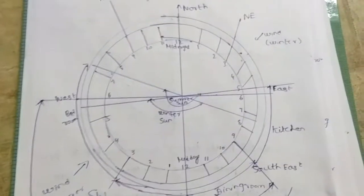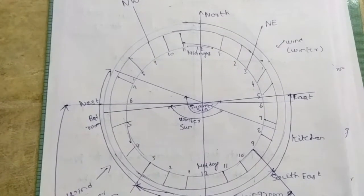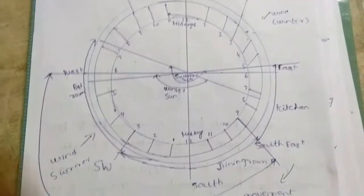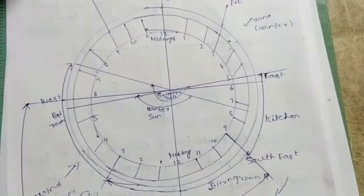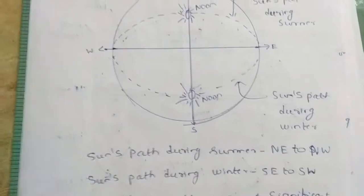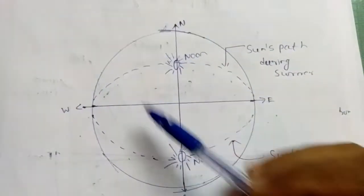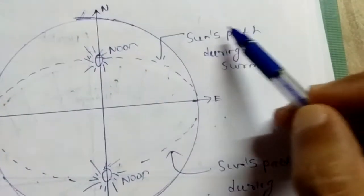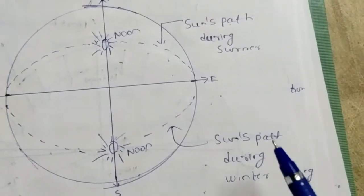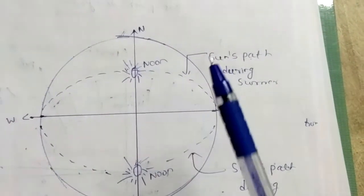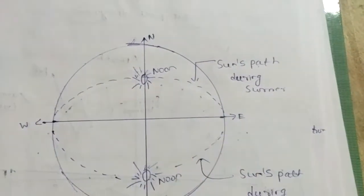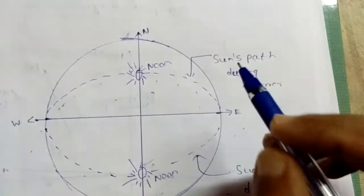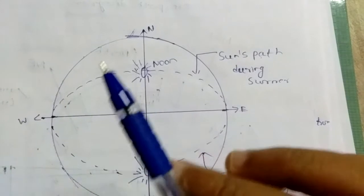Since we are located in the northern hemisphere, let us discuss the direction of sunrise and sunset during the summer season, and the direction of sunrise and sunset during the winter season. On screen you can see the north, east, south, and west directions marked. One important thing to note is that sunrise does not occur exactly at east, and sunset does not occur exactly at west.